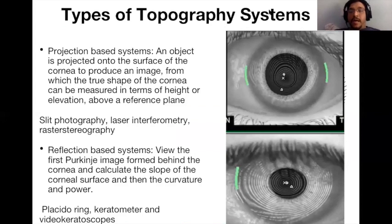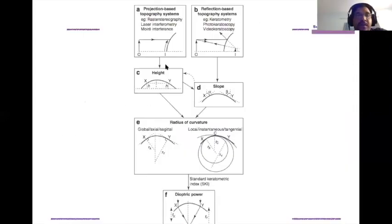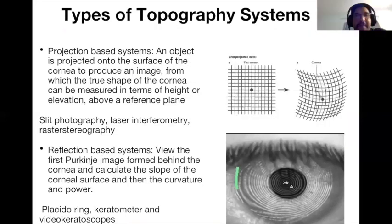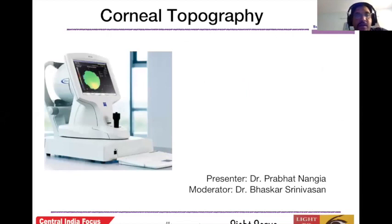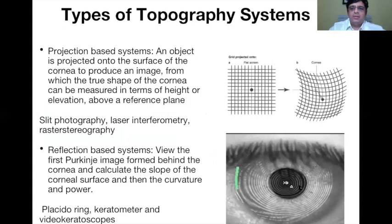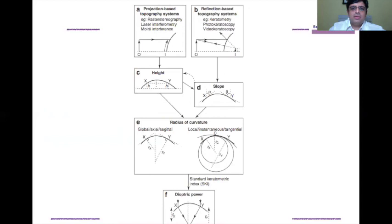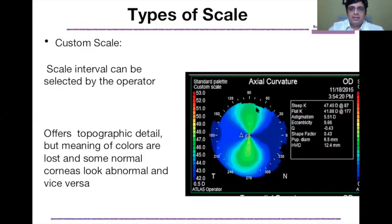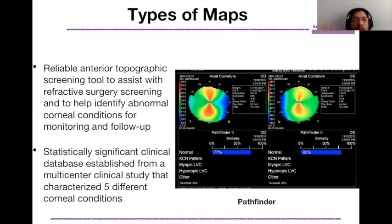Practical tips for daily practice: when looking at a Placido-based topography printout, first confirm patient identity and date — especially important when comparing maps for keratoconus progression. Then check the scale being used: if the color coding range changes, what appears more red might simply reflect a scale change rather than actual steepening. Each machine has a predetermined range — for example, the Tomi machine from Nikon uses 0.5 to 110 diopters — and you need to know whether colors are fitted to the predetermined range or individualized for that cornea. Prefer a standard color coding for initial screening; only change the scale to examine a map in more detail for a specific patient.